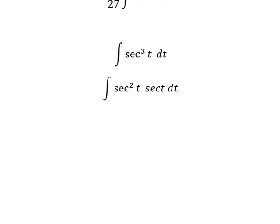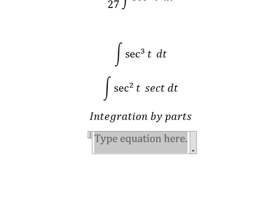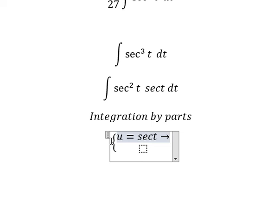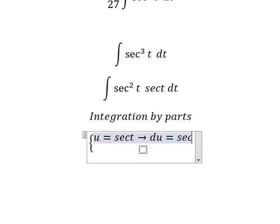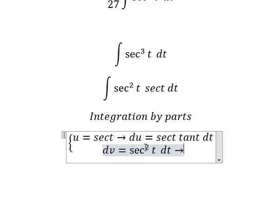Next I will use integration by parts. I will put u equal to sec(t), and then we take the first derivative of both sides. For dv, we have sec²(t) dt. The integration of dv gives v equals tan(t).